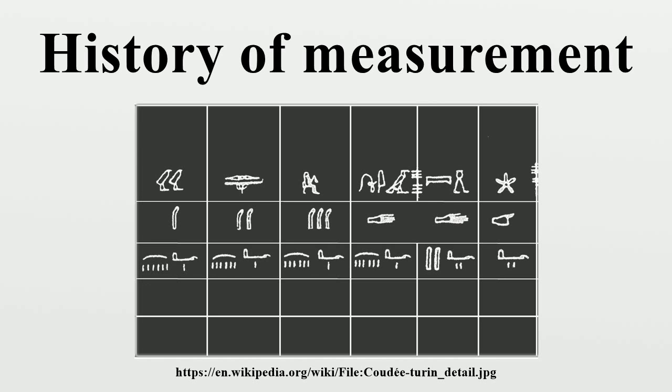When it was necessary to compare the capacities of containers such as gourds or clay or metal vessels, they were filled with plant seeds which were then counted to measure the volumes. When means for weighing were invented, seeds and stones served as standards. For instance, the carat, still used as a unit for gems, was derived from the carob seed.